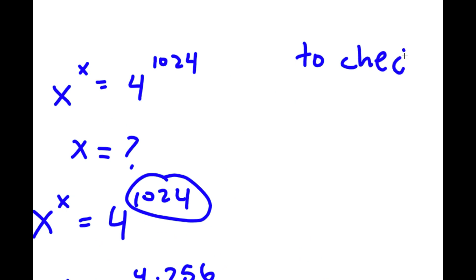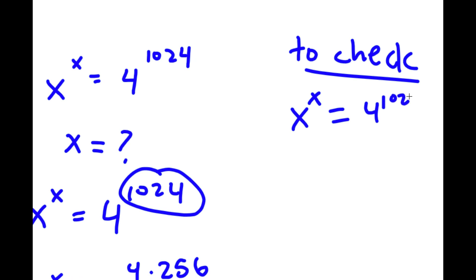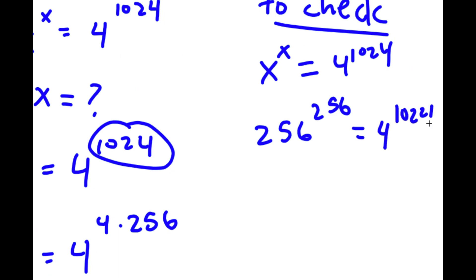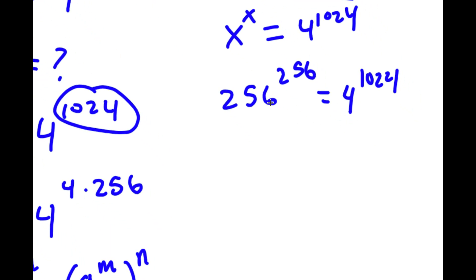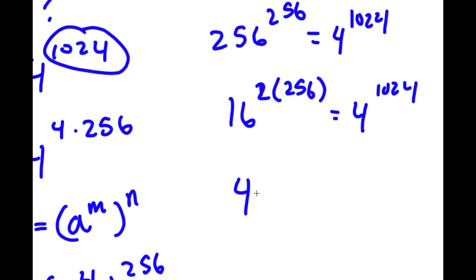Now to check: I have x to the power of x is equal to 4 to the power of 1024. We know that x is 256, so I have 256 to the power of 256 is equal to 4 to the power of 1024. Now, 256 is the same as 16 squared, so I have 16 squared, to the power of 256, is equal to 4 to the power of 1024. And 16 is the same as 4 squared, so I have 4 to the power of 1024 is equal to 4 to the power of 1024.